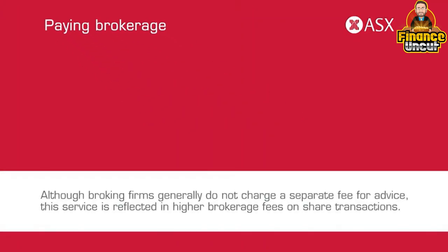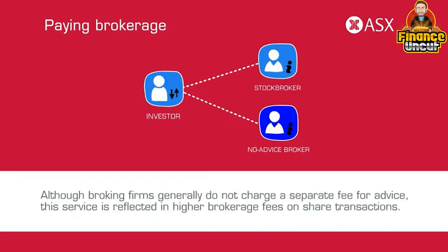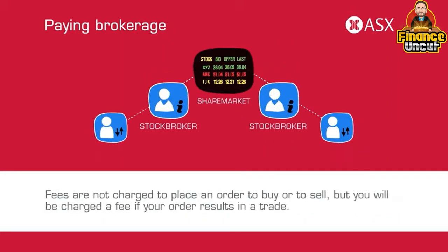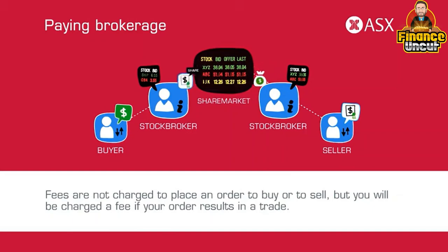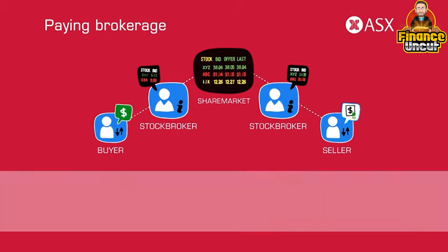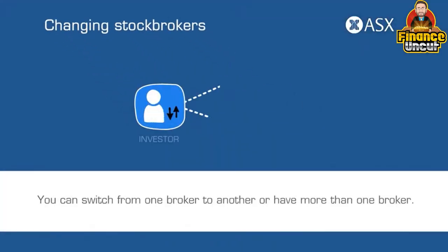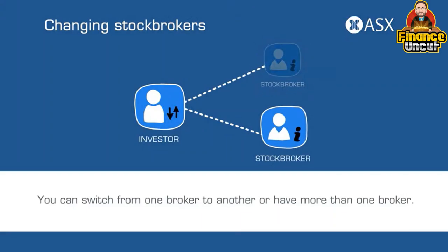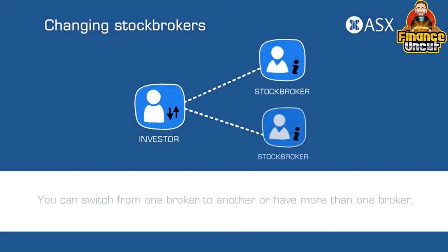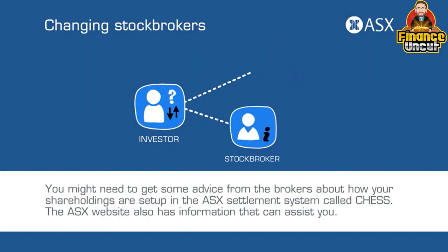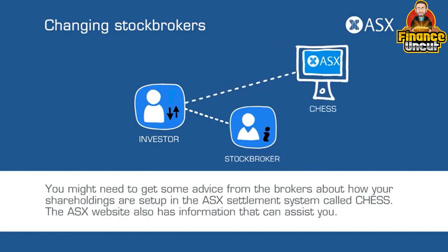Paying brokerage: although broking firms generally do not charge a separate fee for advice, this service is reflected in higher brokerage fees on share transactions. Fees are not charged to place an order to buy or sell, but you will be charged a fee if your order results in a trade. You can switch from one broker to another or have more than one broker. You may need to get advice from the brokers about how your shareholdings are set up in the ASX settlement system called Chess. The ASX website also has information that can assist you.